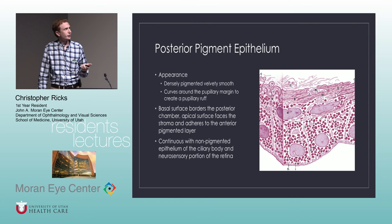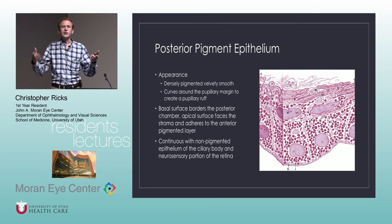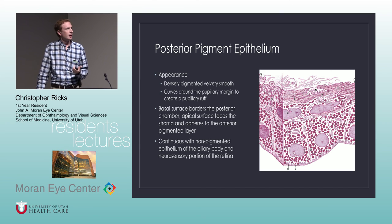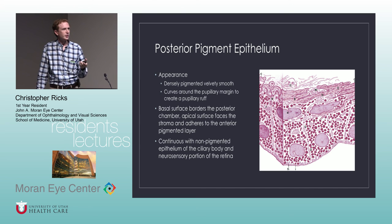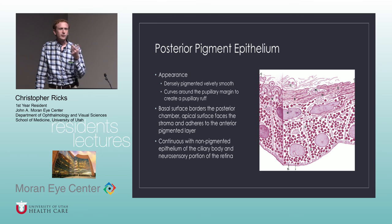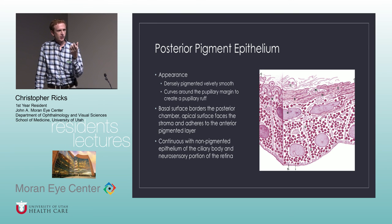Then you have the posterior pigment epithelium. This is the part you see coming through the pupillary rough, especially with people with pupillary ectropion, where you can see it coming from posterior to anterior.